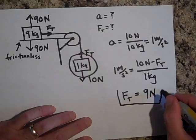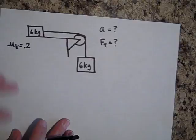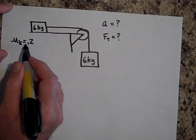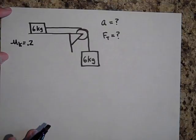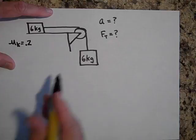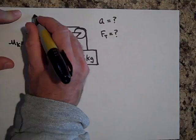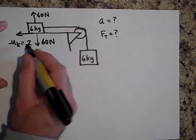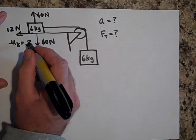Now let's add friction — same style of problem but with a coefficient of friction of 0.2. The 6-kilogram block on the table has 60 newtons down and 60 newtons up as the normal force. The force of friction is 0.2 × 60 = 12 newtons. I want to know the acceleration and the tension force. Go ahead and pause.